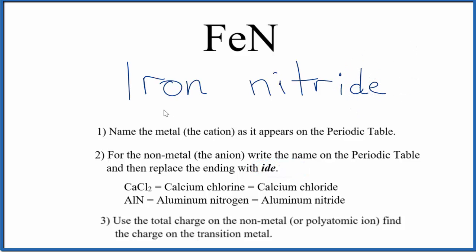So at this point we have iron nitride, but remember we said that iron is a transition metal, so we really have to figure out its charge. We'll use the charge on the nonmetal to figure out the transition metal. So we'll look at the nitrogen to figure out the charge on the iron.